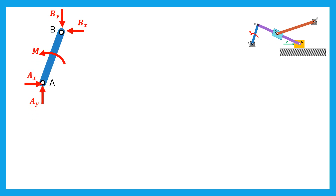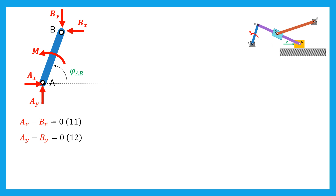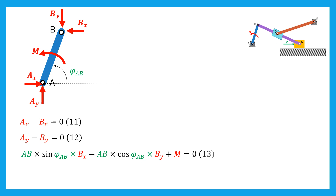The last link is the bar AB, with angle phi_AB with the horizontal line. The horizontal equilibrium writes: AX minus BX equals zero. The vertical equilibrium writes: AY minus BY equals zero. And the last equation, the moment equilibrium about A, gives: AB·sin(phi_AB)·BX minus AB·cos(phi_AB)·BY plus M equals zero.